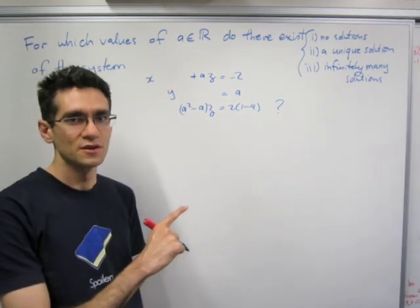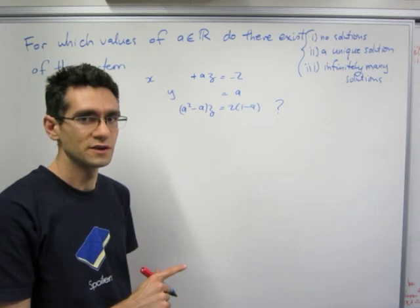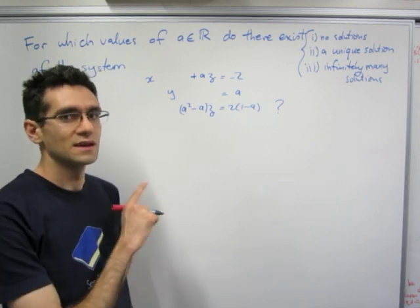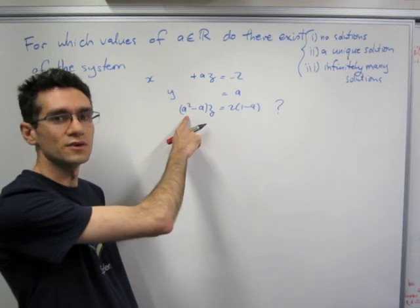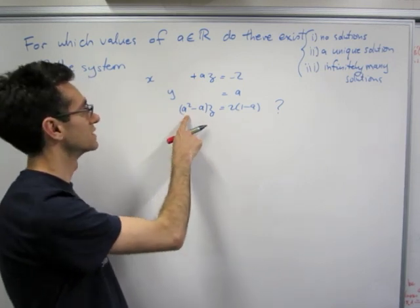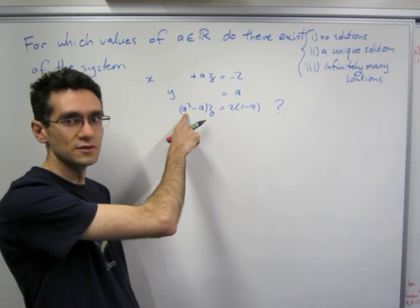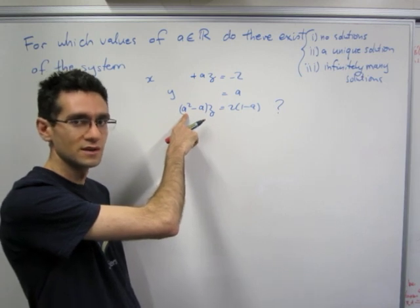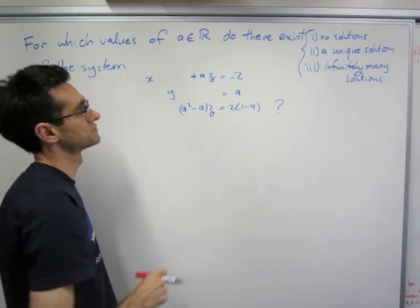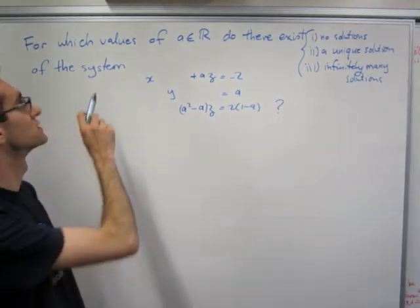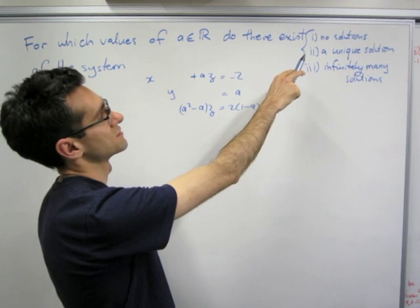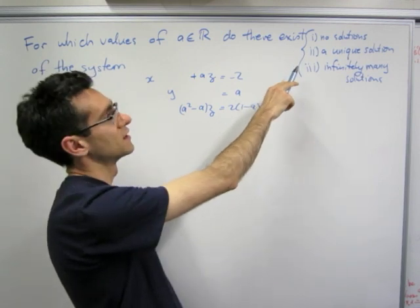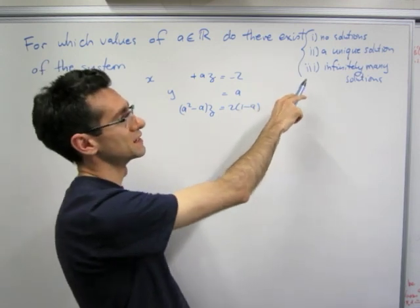Here's a system of linear equations which is slightly different from the ones we've seen so far in class. It has in it, as a coefficient, what we might call a parameter, namely it's an unknown real number as the coefficient. So the question is, for which values of real number a do there exist as usual, no solutions, a unique solution, or infinitely many solutions.